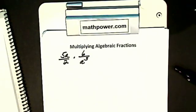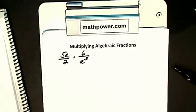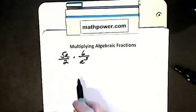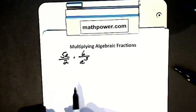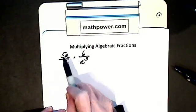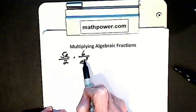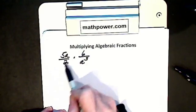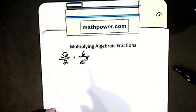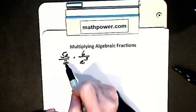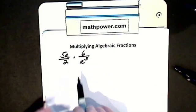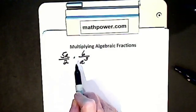Now we're going to multiply algebraic fractions. We're going to do a little one and a big one without factoring. When I multiply fractions, I want to cancel if I can. I want to cancel any numerator with any denominator. I can cancel on an angle — numerator and denominator — or up and down. What I can never do is cancel two numerators or two denominators.